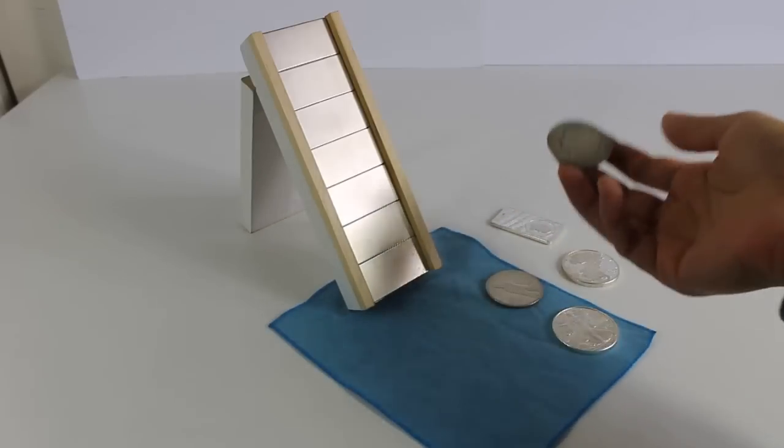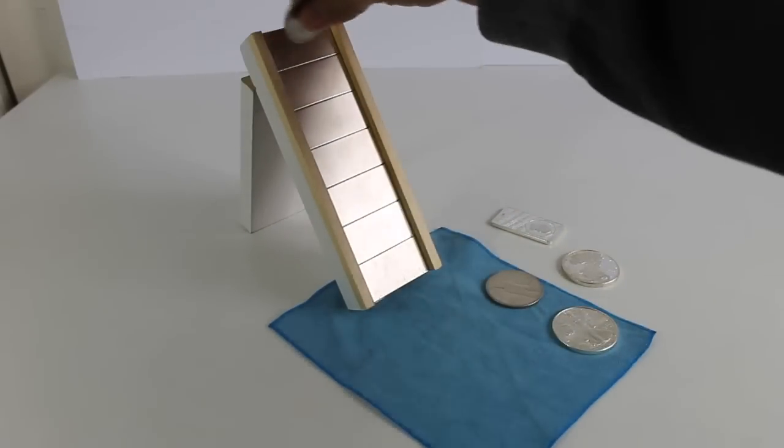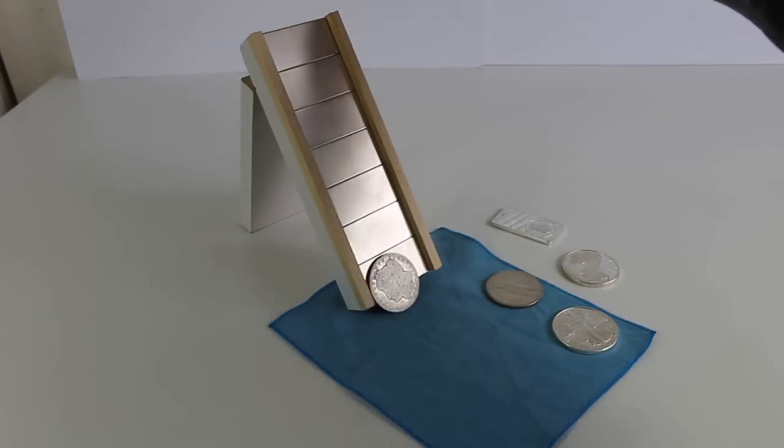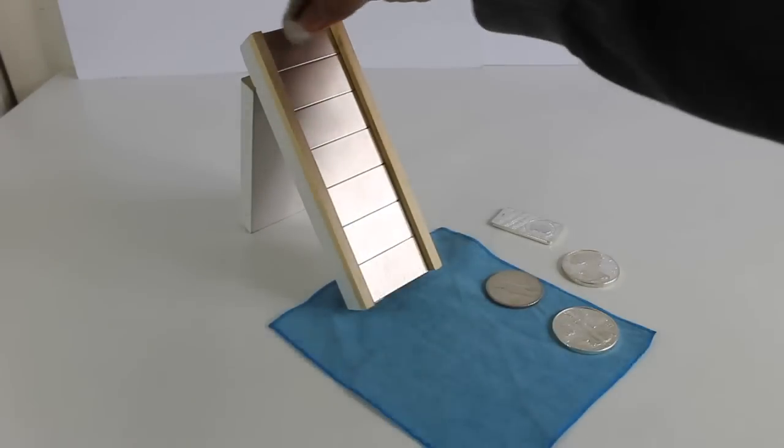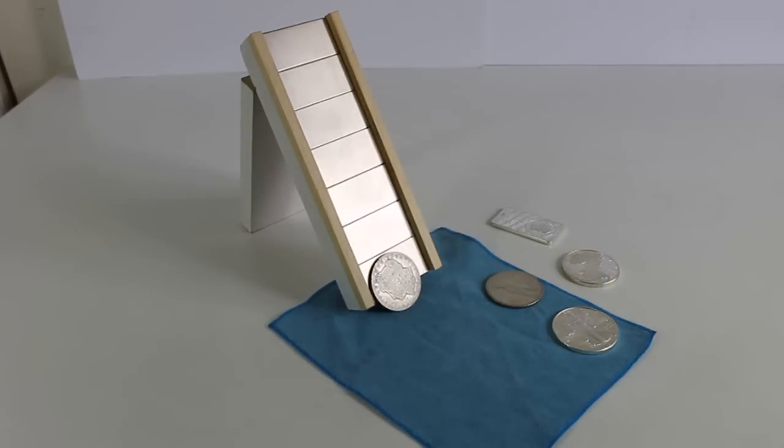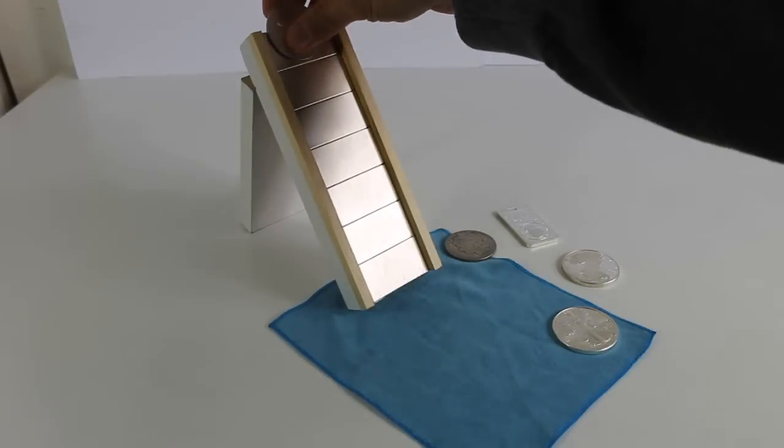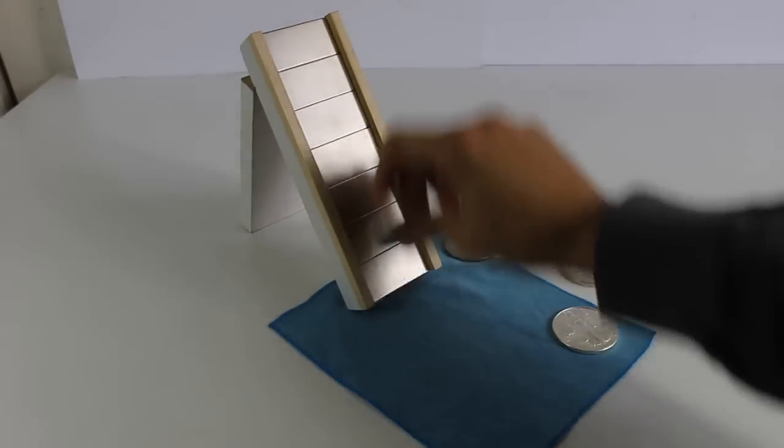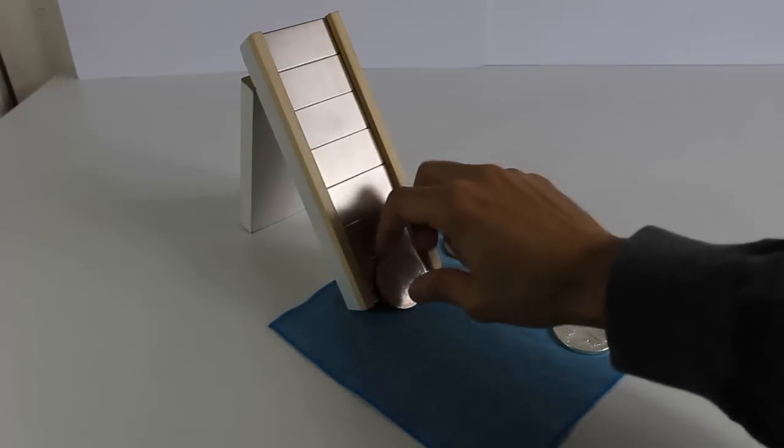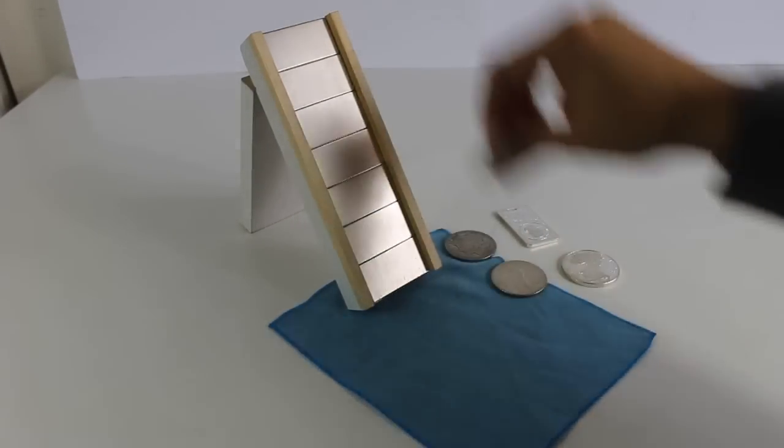Okay, let's do the real silver piece. This is a morgan dollar. See how it's nice and slow. Peace dollar. Now the real silver eagle.